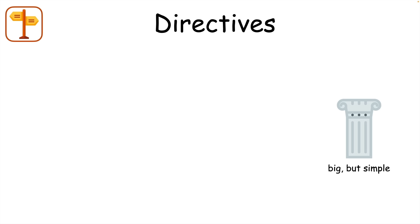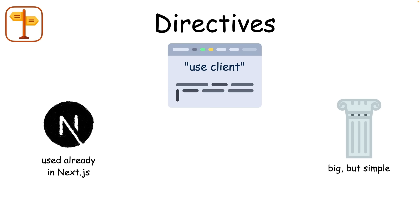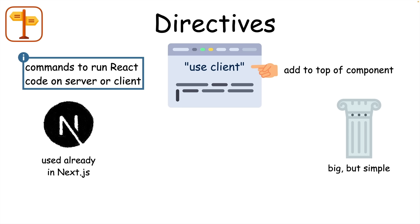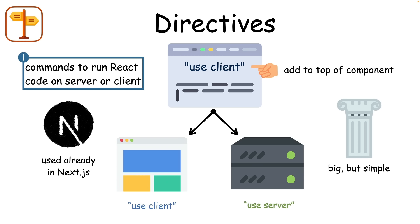Directives are another big but simple change to React. If you've used Next.js lately, you've probably already seen them. Directives are just strings which we can add to the top of component files. Directives let us tell React where we want to run a React component — on the client with 'use client', or on the server with 'use server'.